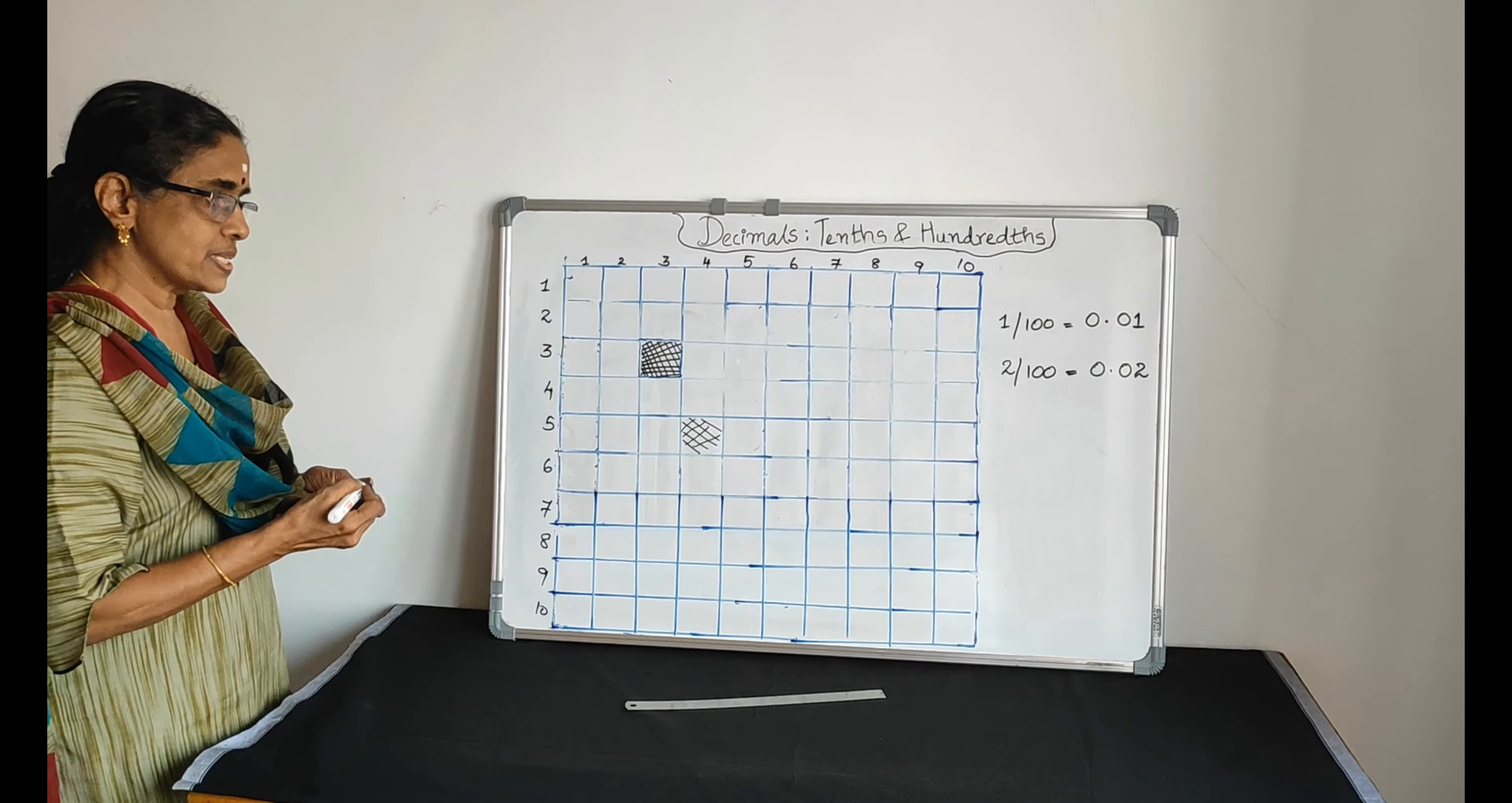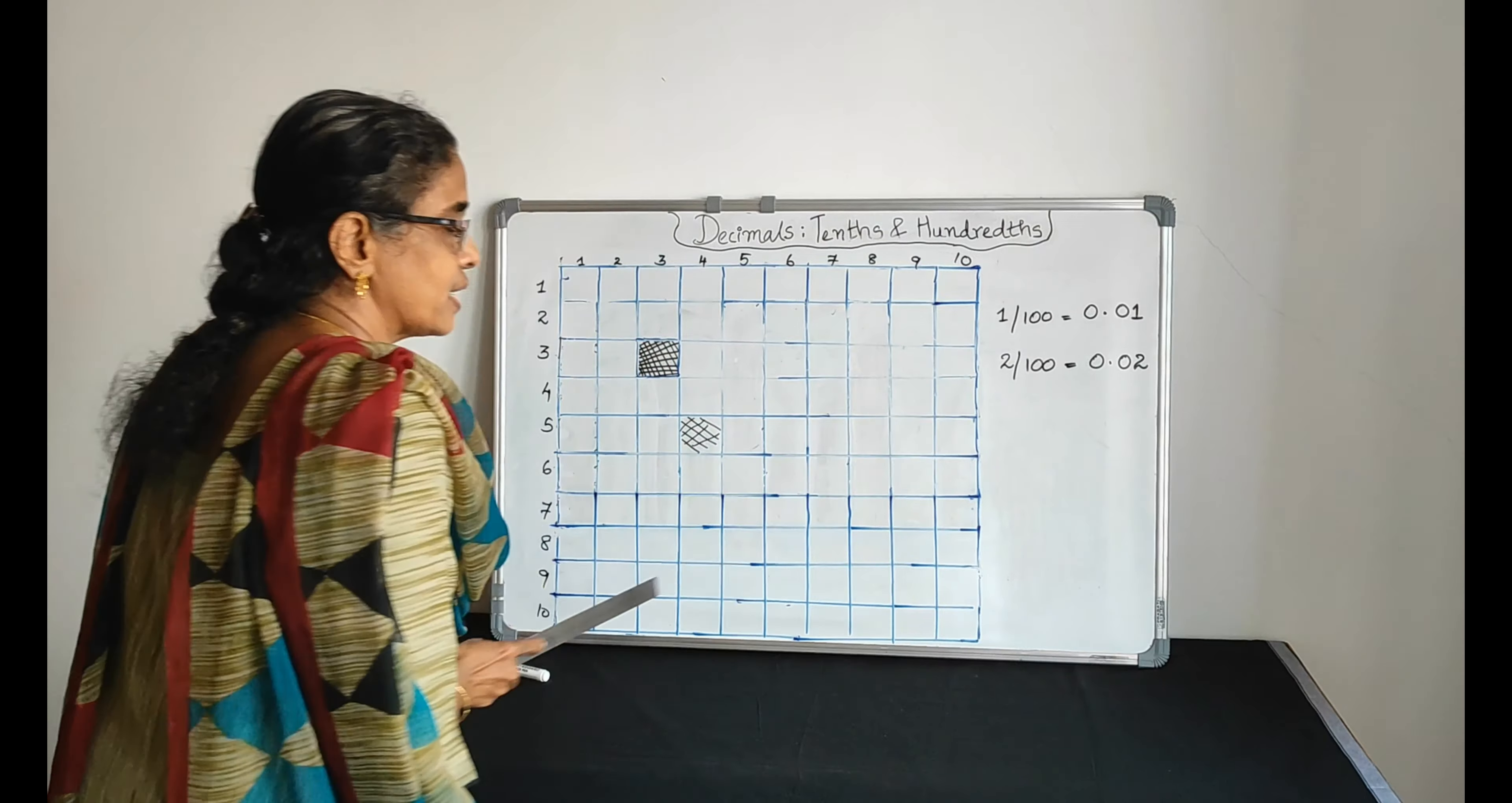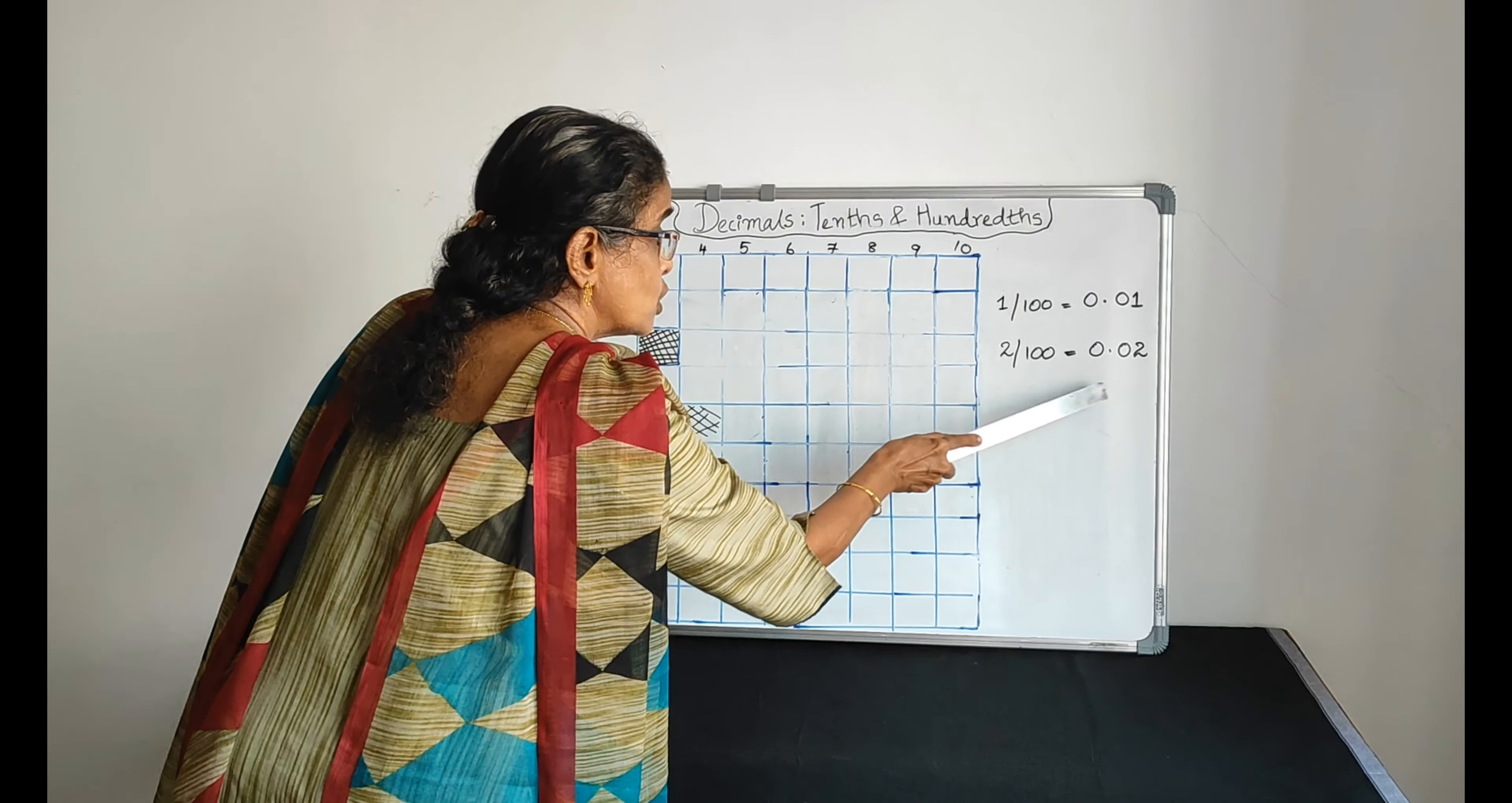Now it represents how many parts are shaded? Two parts are shaded. It represents 2/100, which is equal to 0.02. Two hundredths.